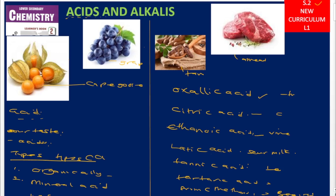In this first segment of the new curriculum Chemistry Senior Two, we have looked at the first property of acids — that acids are sour. We have also looked at organically occurring acids. Please subscribe, share, like, and comment at RevisionUG.com. We'll meet in the next lesson where we shall write the formal chemistry definition of an acid.